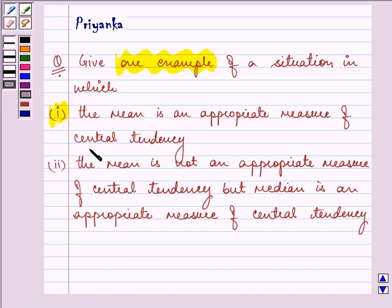And secondly, the mean is not an appropriate measure of central tendency but median is an appropriate measure of central tendency.